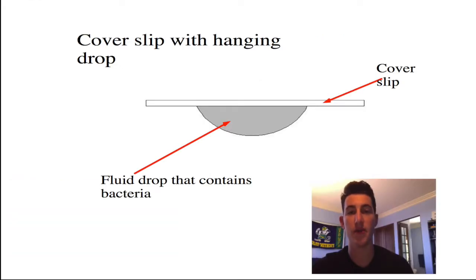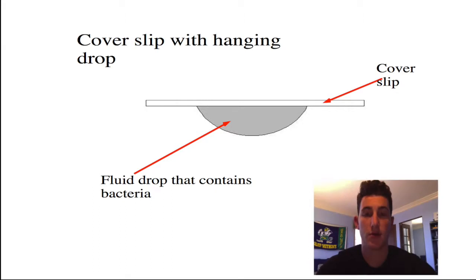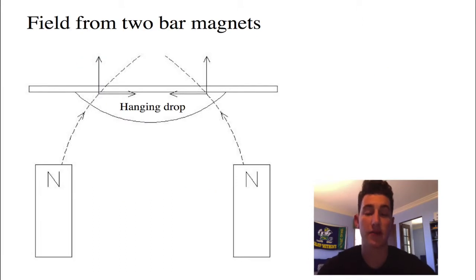What we're showing here is how a bacteria sample is placed under the microscope. The gray feature is a water drop containing the bacteria. It's placed onto a cover slip and then flipped upside down to form what is called a hanging drop. Now look at the field produced by one of the magnets near the hanging drop. Our goal is to direct the bacteria into a small spot in the center. This small spot is what we call a peloton.